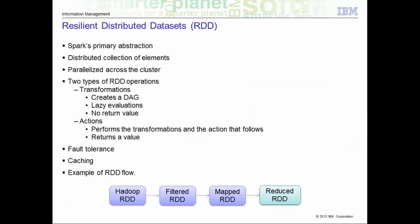Now let's get into the core of Spark. Spark's primary core abstraction is called Resilient Distributed Dataset, or RDD. Essentially, it is just a distributed collection of elements that is parallelized across the cluster. You can have two types of RDD operations: transformations and actions. Transformations are those that do not return a value. In fact, nothing is evaluated during the definition of these transformation statements. Spark just creates these directed acyclic graphs, or DAG, which will only be evaluated at runtime. We call this lazy evaluation.